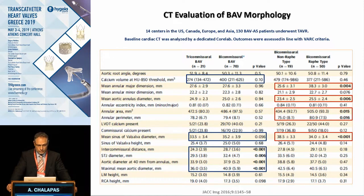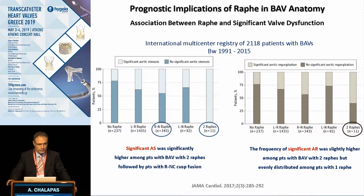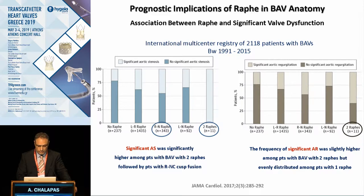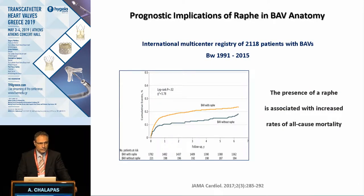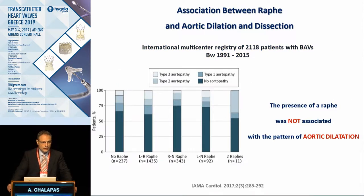When comparing bicuspid valves according to raphe and non-raphe type, the raphe type is characterized by larger anatomy at the level of the aortic annulus. However, at the level of the sinuses, the opposite is true. Understanding the anatomy is crucial because it predicts the functional status. According to the number of raphes, we have different functional categories — with higher incidence of aortic valve stenosis and aortic valve insufficiency in cases with two raphes, representing type 2 according to the Sievers classification. The functional status can affect mortality, and the type and existence of raphe was not associated with aortopathy and aortic dilatation according to recently published data.